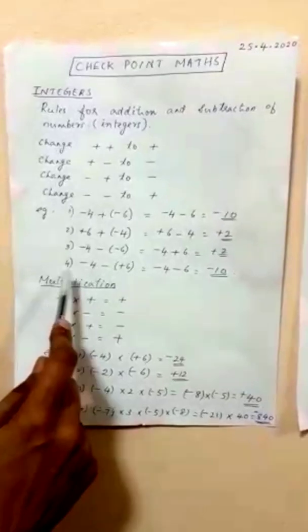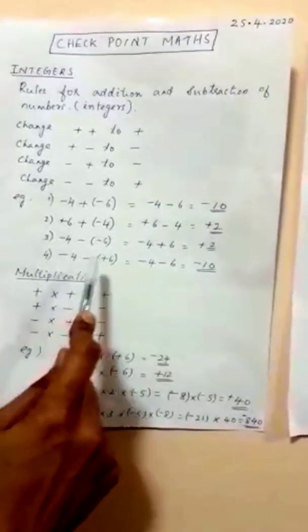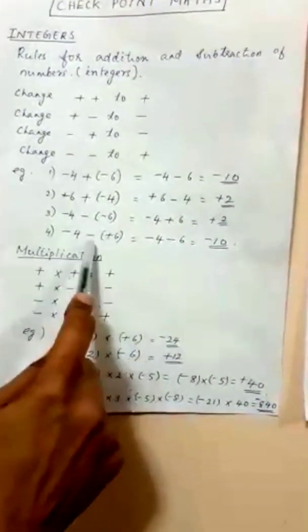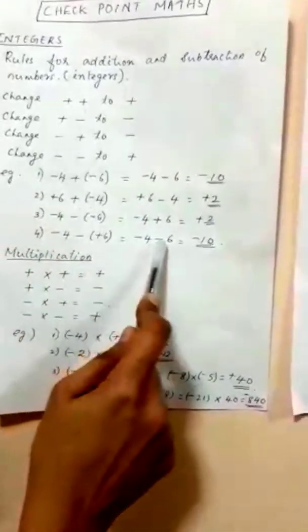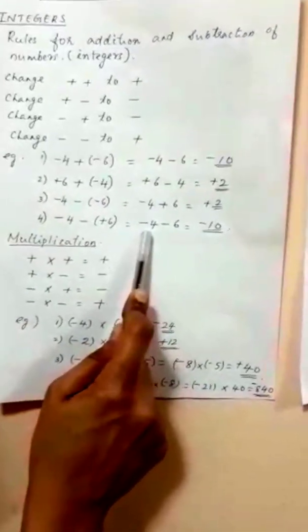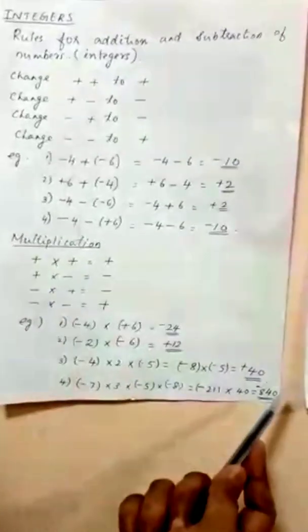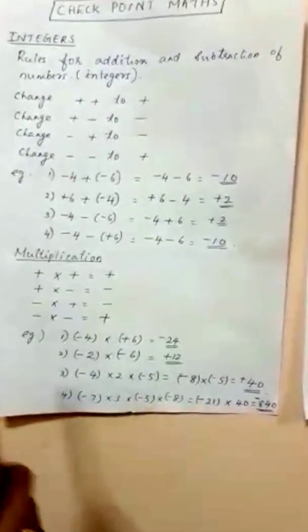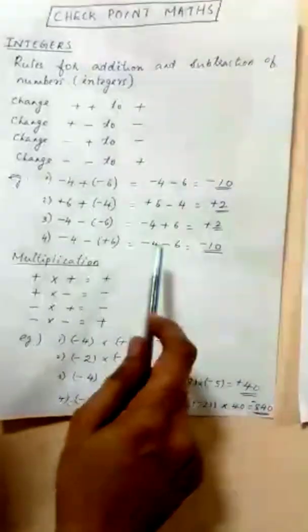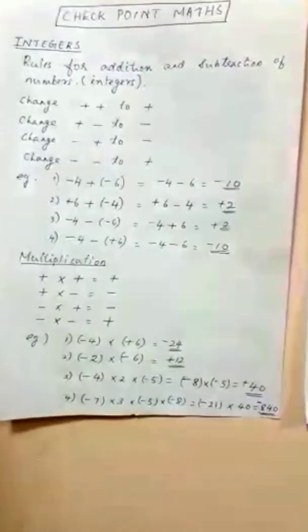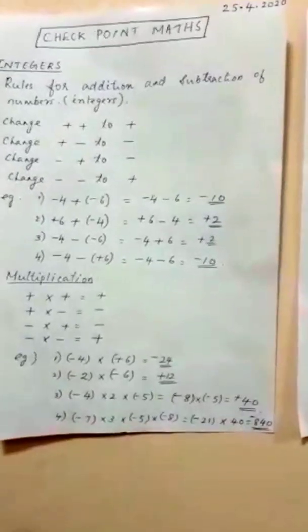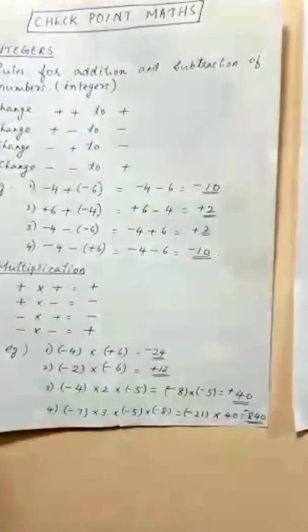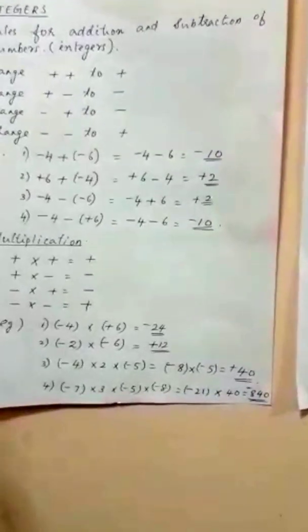Example 4: minus 4 minus plus 6. Opposite signs — minus and plus change to minus — so the question becomes minus 4 minus 6. Same sign, so we add: 4 plus 6 is 10, and the sign is minus. Summary: same sign — add and put that sign; different sign — subtract and put the sign of the bigger number.